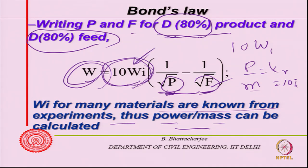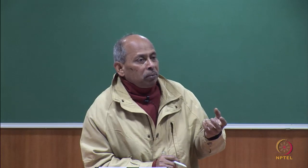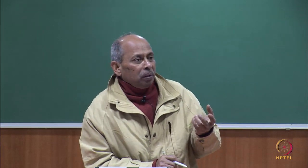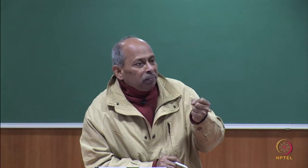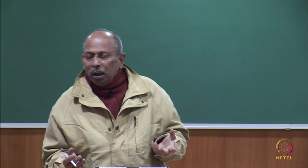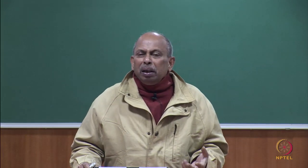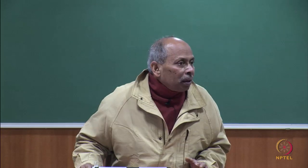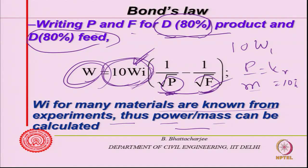This will depend upon the type of material you have. Cement clinker will have a very high work index value, while fly ash will have much less. Cement is higher because it is a clinkerized, hard material. Fly ash, which is produced differently, will require much less energy. Similarly, the sizes would be different, and limestone powder will have a different W_i - these values are listed from experiments for different types of grinders and crushers.